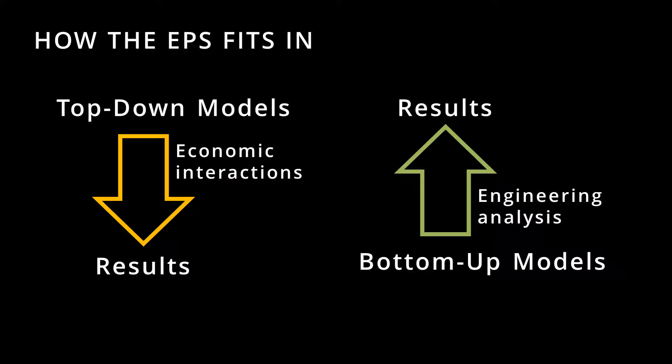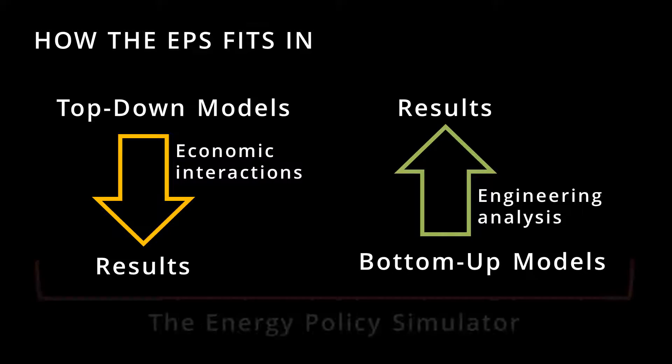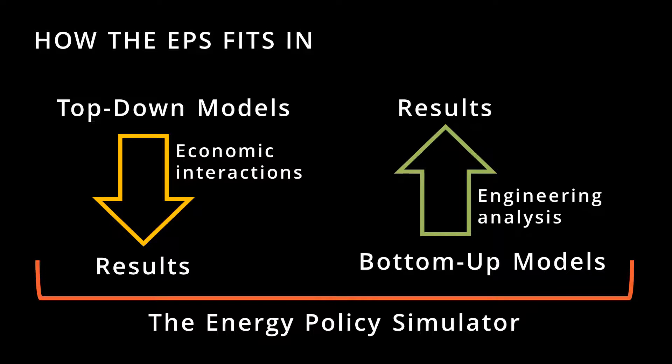Another type of computer model is a bottom-up or engineering analysis model. These models often start from an equipment or energy use perspective and determine potential savings by counting things, such as the number of inefficient air conditioners that could be replaced with efficient air conditioners and how much electricity would be saved as a result. The EPS follows neither of these approaches, though it sometimes uses input data and information on interactions from other models. For example, the EPS uses price elasticities of demand that could be derived from a top-down model, and certain policies act within technical limits that may be estimated by a bottom-up model.